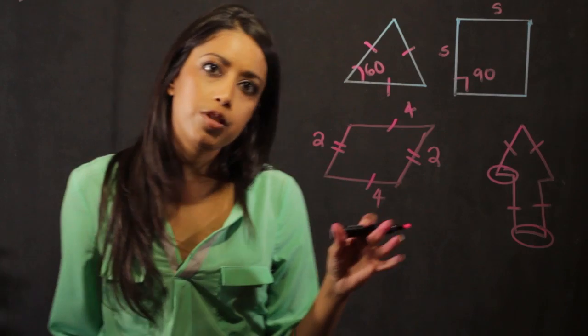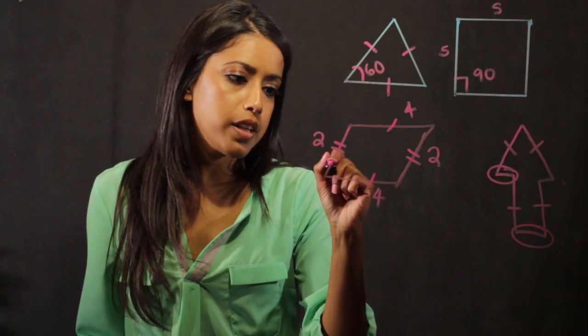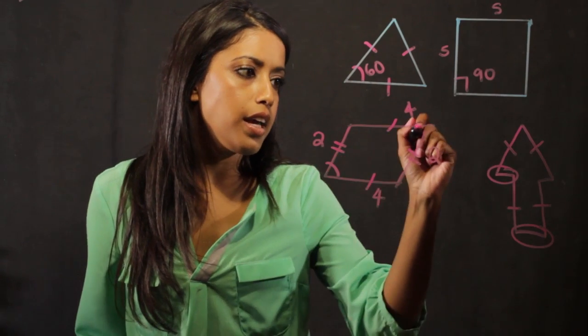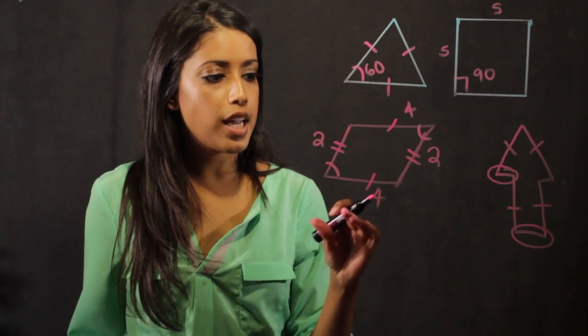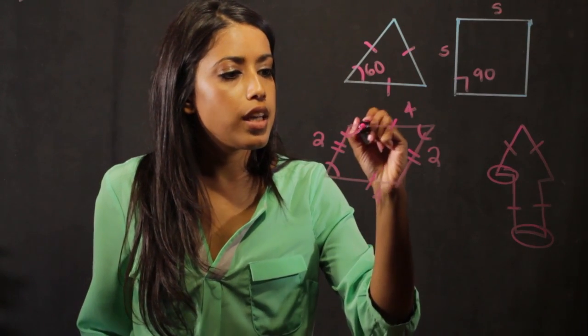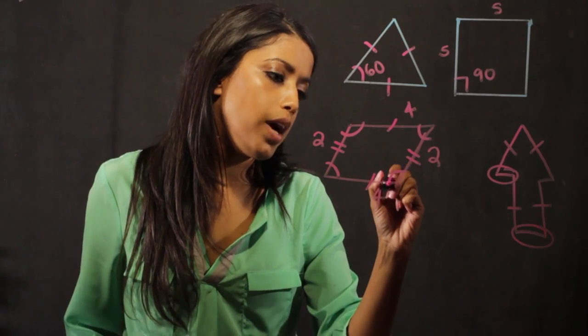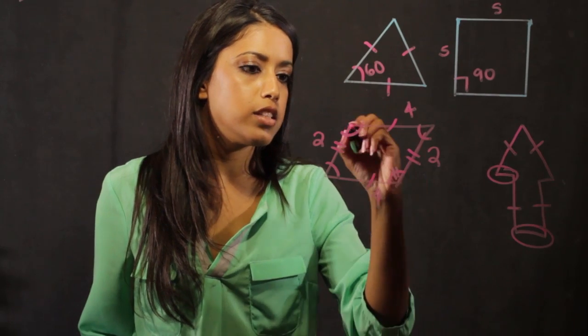The other part of congruency is with the angles. So if I look at the angle here and here, they're going to be the same. And also this angle and the one on the bottom corner, they're going to match as well.